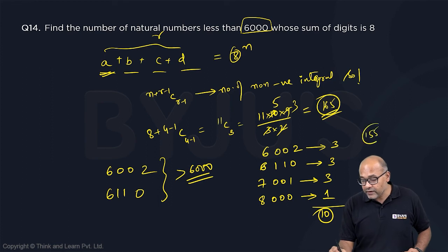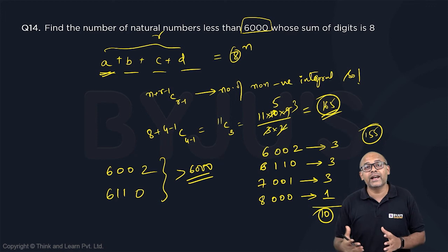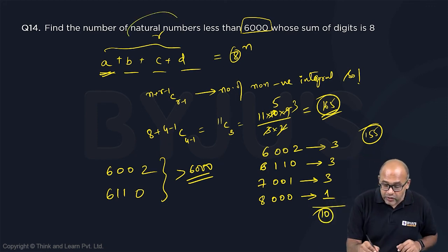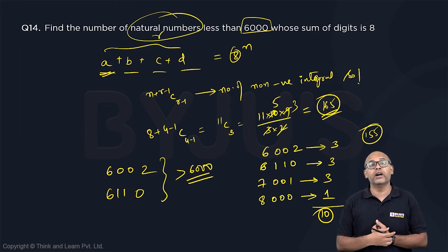So therefore my answer will be 155. It's a very nice question disguised as a numbers question but actually it's a P and C question. Now you might be wondering I'm looking at all natural numbers. Why am I considering only 4 digit numbers?